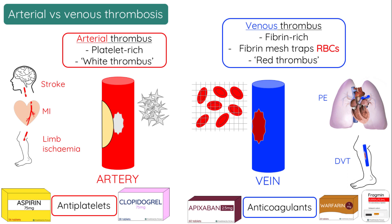It is important to note that stroke prevention is one anomaly to this rule, in that we prevent stroke using both antiplatelets and anticoagulants, depending on the cause. This is because strokes can be caused by atherothrombosis in the cerebral arteries, or be caused by emboli that form elsewhere in the body and end up in the cerebral arteries, leading to occlusion, ischemia, and stroke.